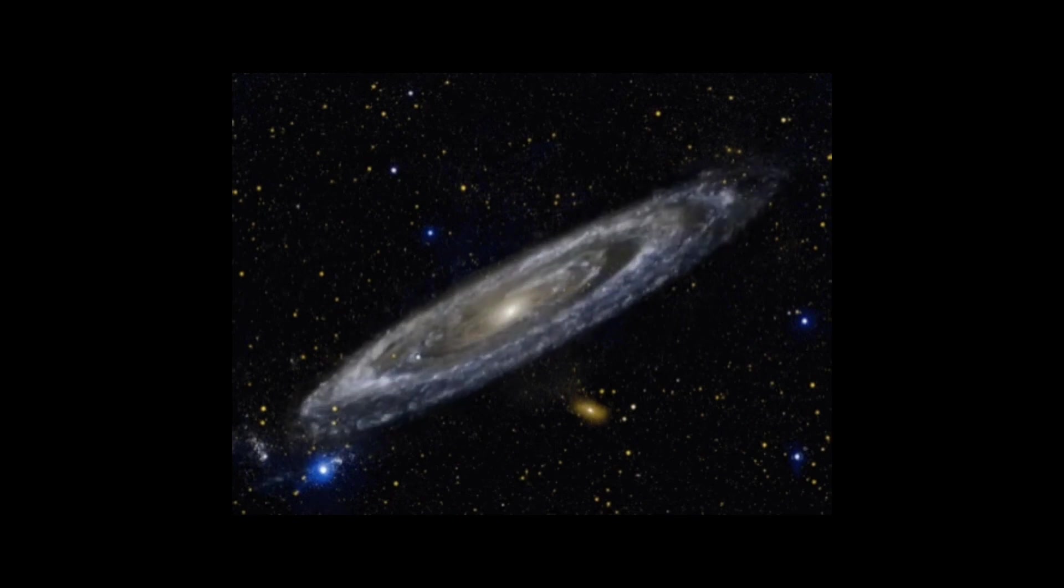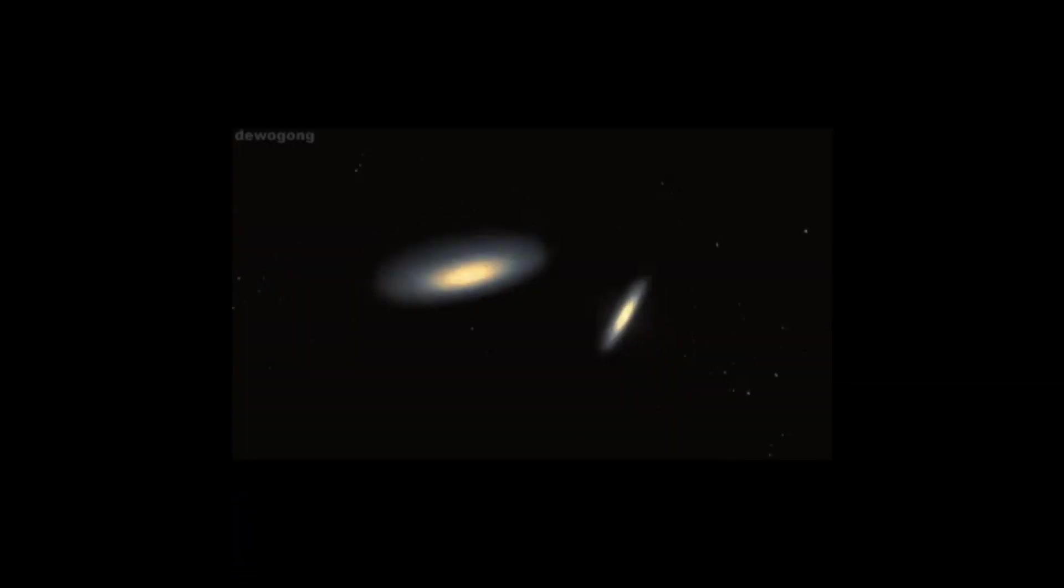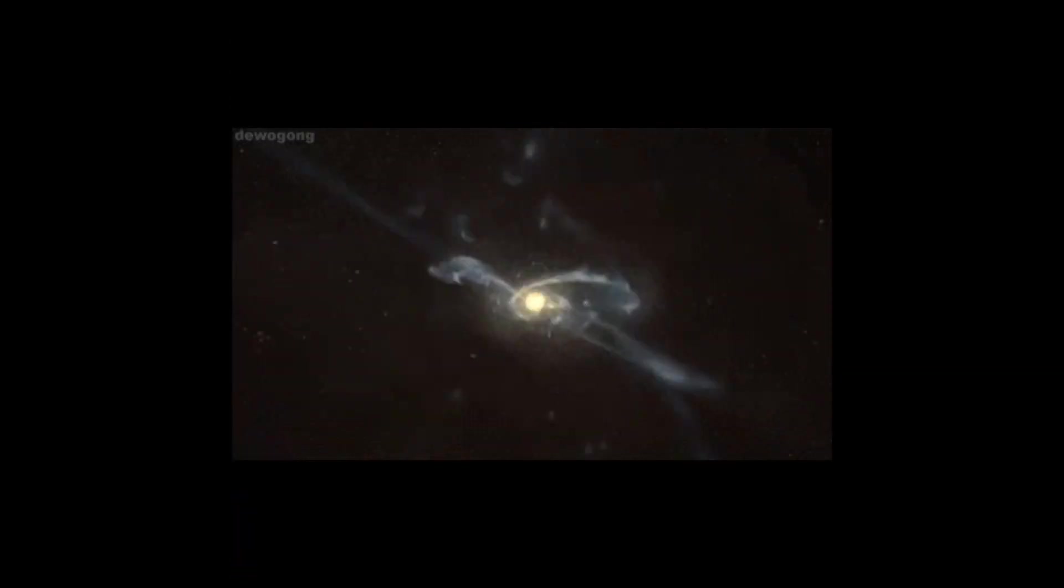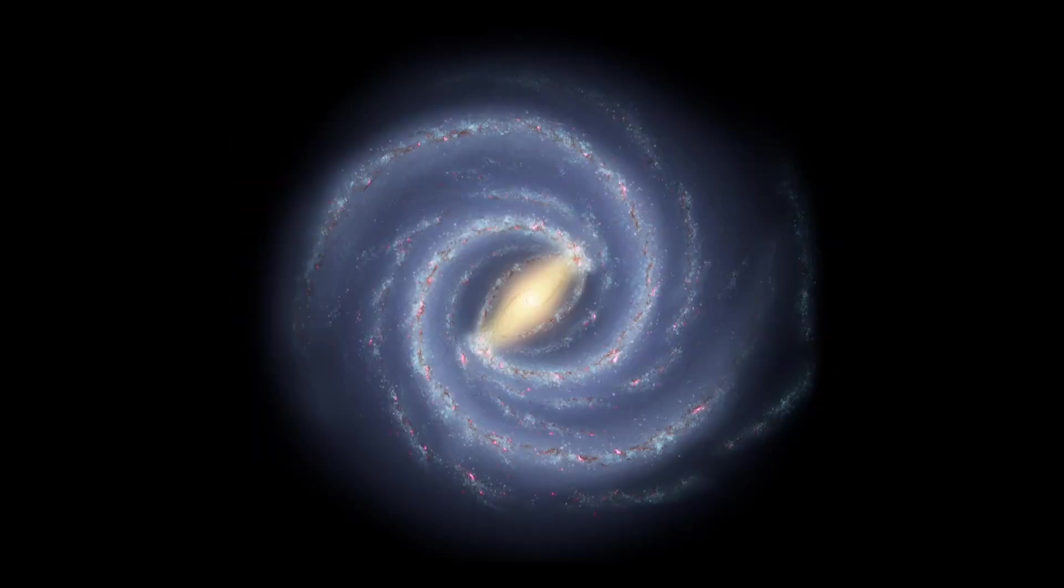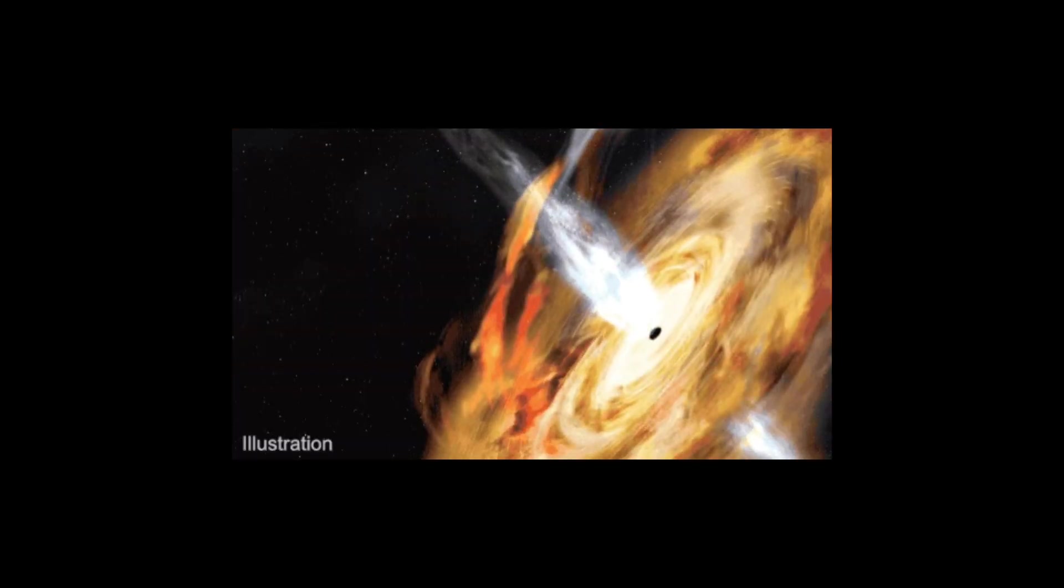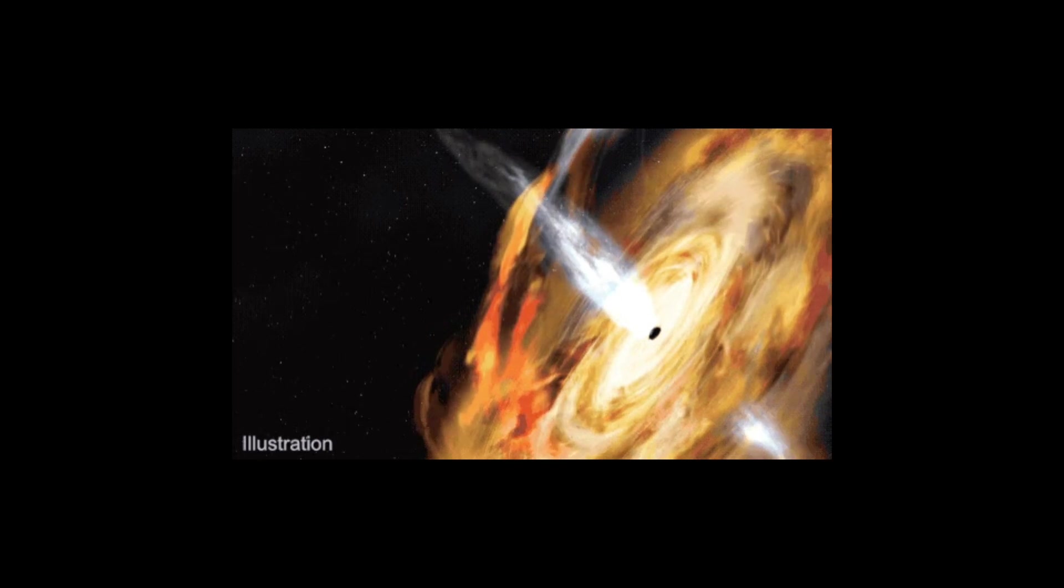Andromeda will eventually merge with the Milky Way in around 5 billion years. Our galaxy's spiral arms will disappear along with our black hole in the center of our galaxy being replaced by Andromeda's black hole, which has the mass of 100 million suns compared to the mass of 4 million suns our black hole in the center has.